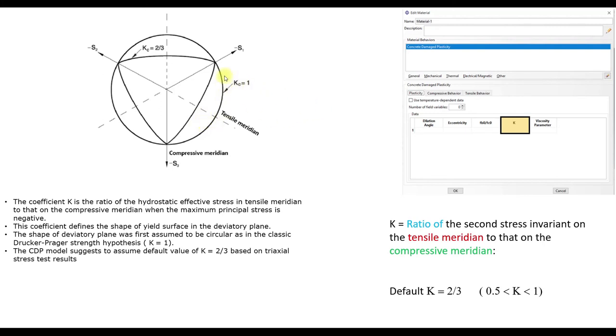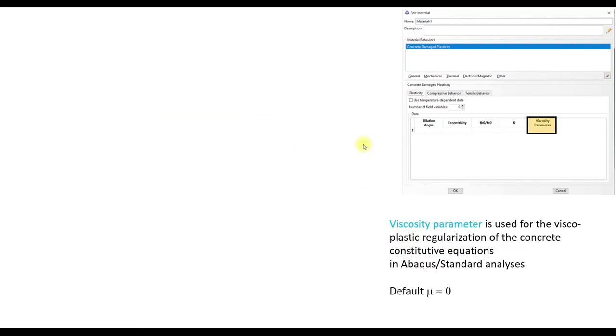You can see here the K value defines the shape of the yield surface in the deviatoric plane. And if the ratio is 1, we have basically a circle. If the value K is about 0.67, it is more like a triangular shape.